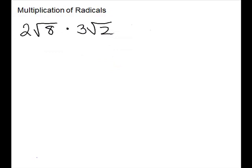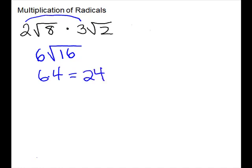Let's look at this problem: 2 times the square root of 8 times 3 times the square root of 2. We will multiply the numbers on the outside, 2 and 3, to get a 6. We have two choices for the radicands. If we multiply them together, 8 times 2 is 16. 16 is actually a perfect square. The square root is 4. You could take the 4 and multiply by the 6, and your answer is 24.